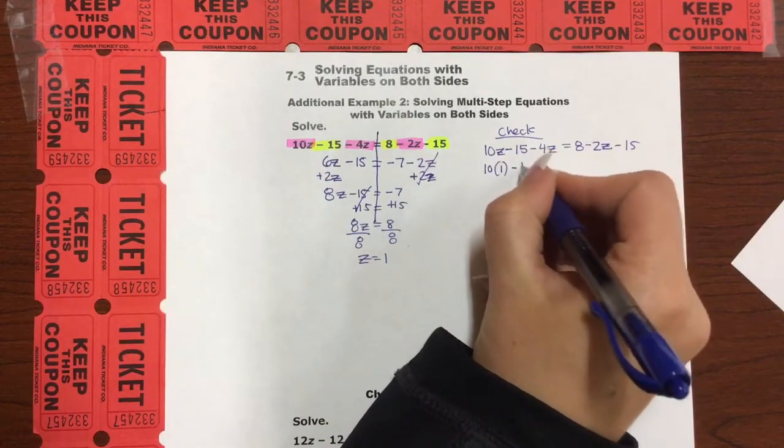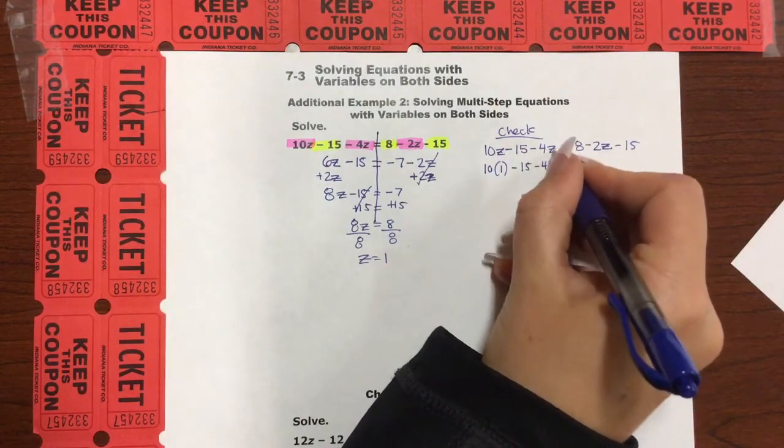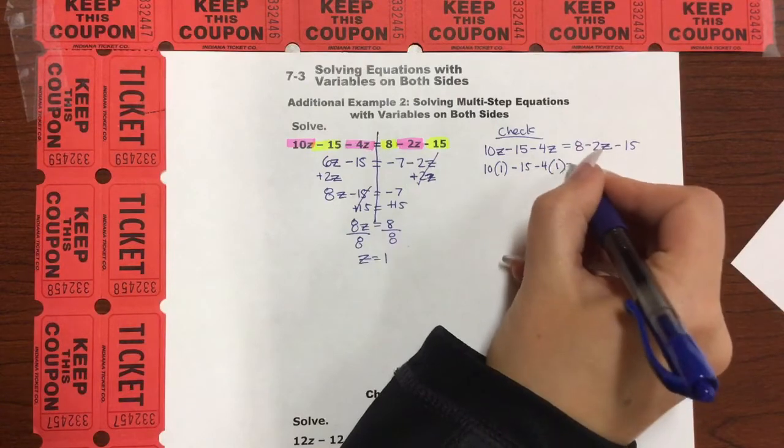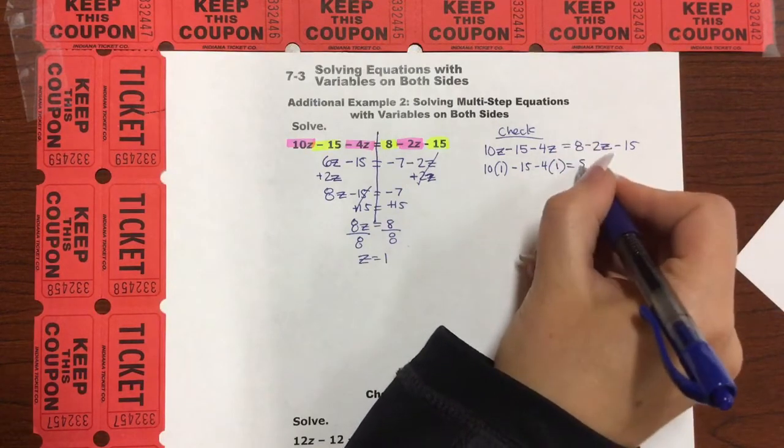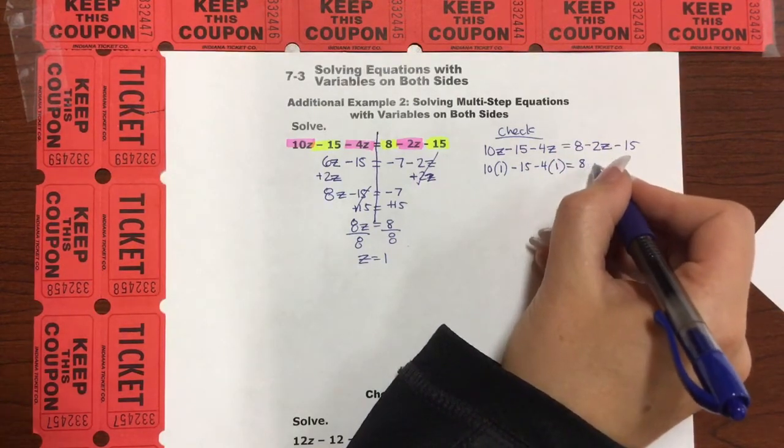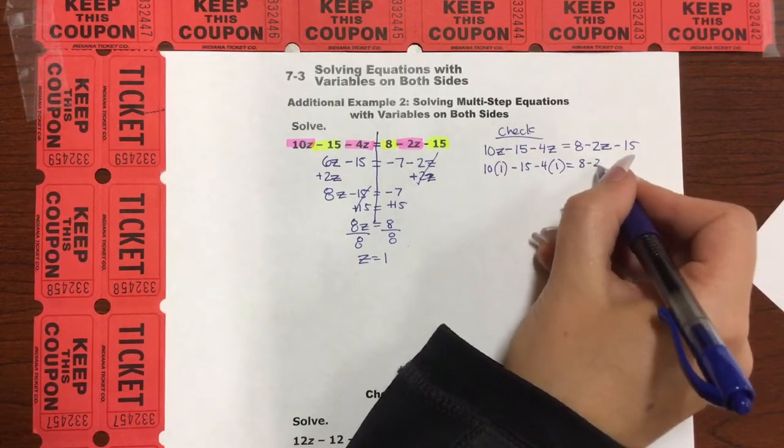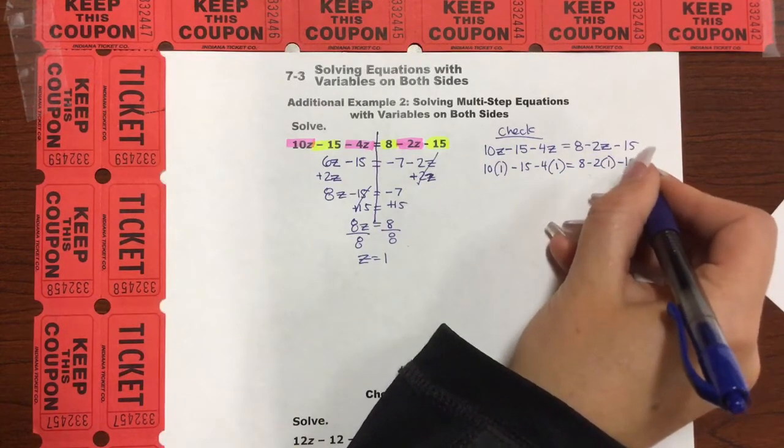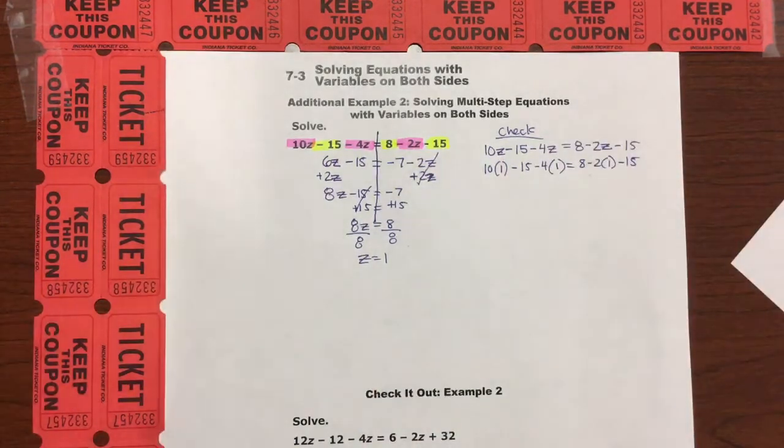So 10 times 1 minus 15 minus 4. There's another z, so I'm going to substitute 1 in there. Equal sign. My equal signs are lined up. It's a good sign. 8 minus 2. Put in a 1 minus 15. All right, let's go.